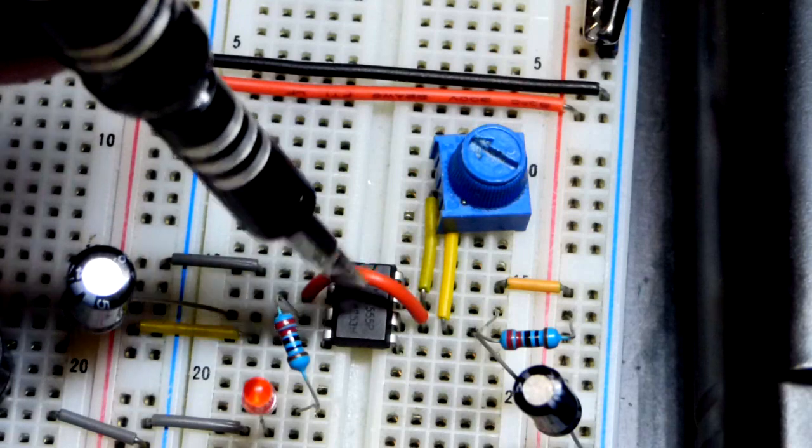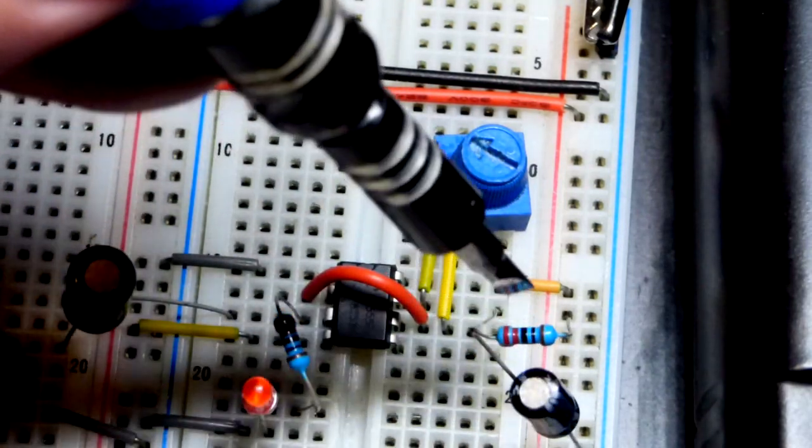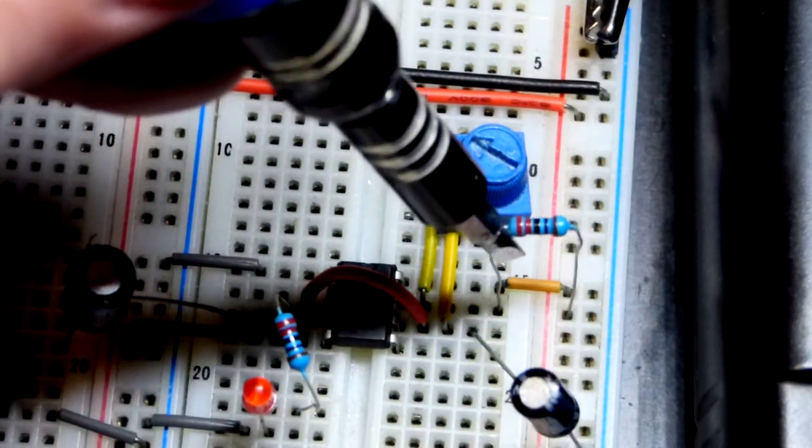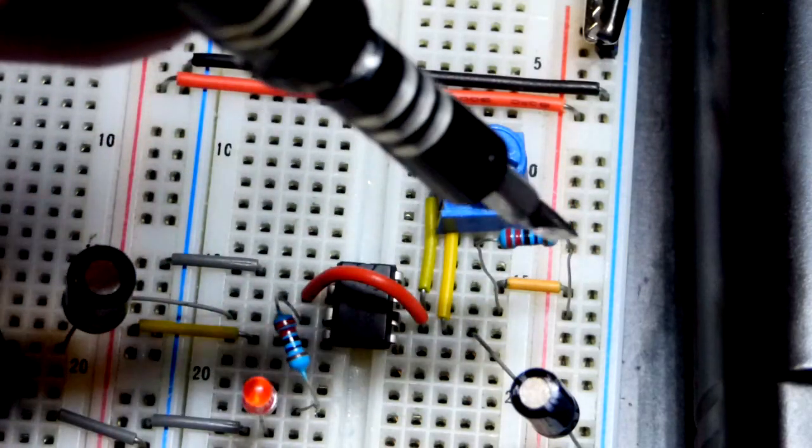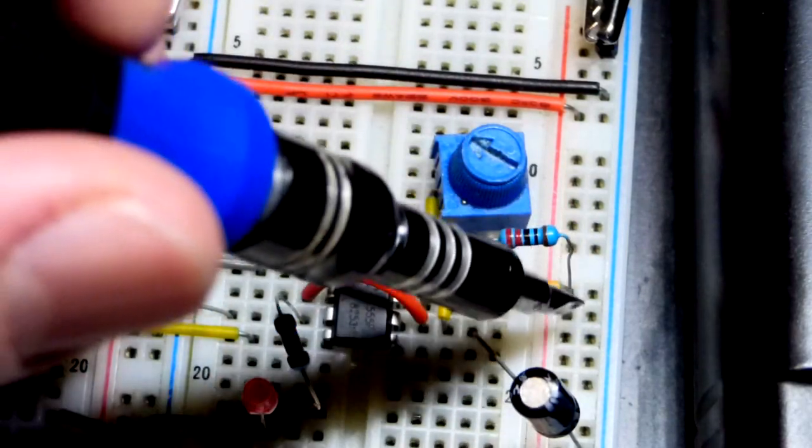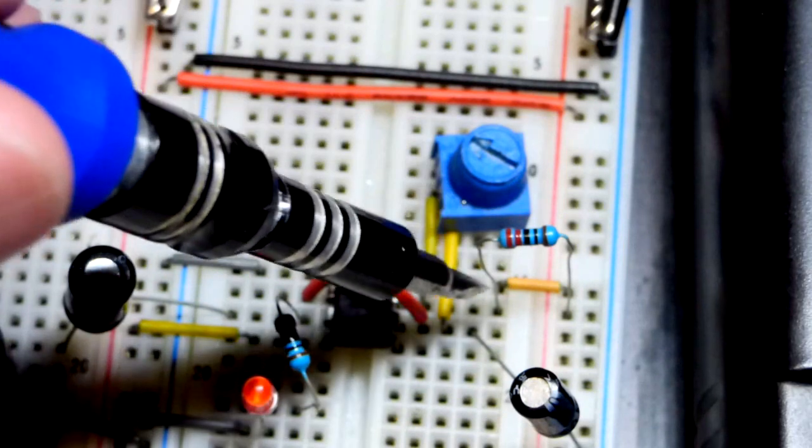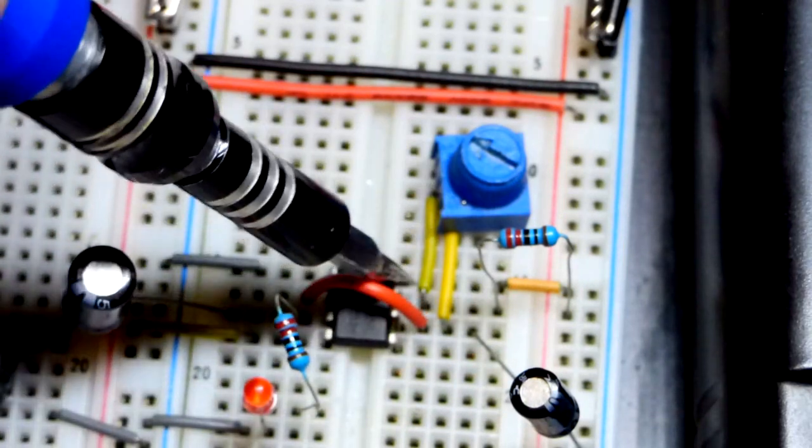This jumper's kind of hiding it right now, but there it is up there. We have for the timing this 220 ohm resistor. We're working with five volts, that's as low as I want to go in our resistance. So that's coming over to pin seven up here, which is the discharge pin.